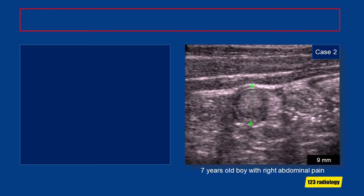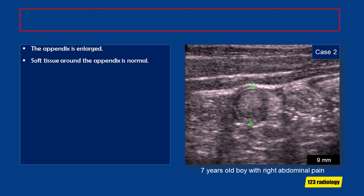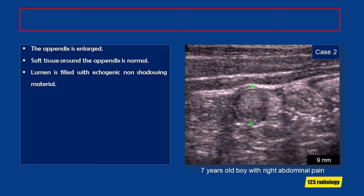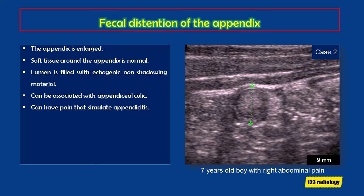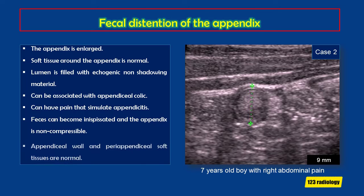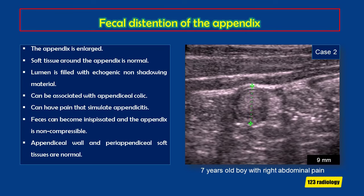Another case: a 7-year-old boy with right abdominal pain. The appendix measures about 9 mm in diameter, but the wall appears normal in thickness and the peri-appendiceal soft tissues look normal. The lumen is filled with echogenic non-shadowing material — this is fecal distension of the appendix. These cases can be associated with appendiceal colic, mimicking appendicitis. The appendix can get as large as 1 cm in diameter; the feces can become inspissated and the appendix is non-compressible, but the appendiceal wall and peri-appendiceal soft tissues remain normal.